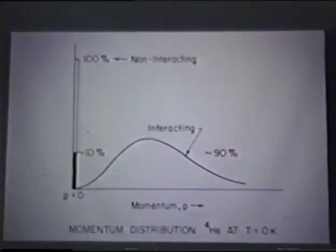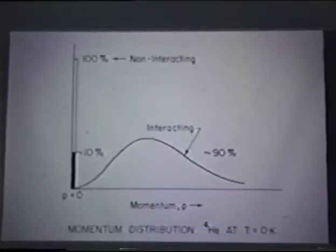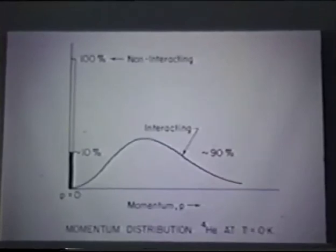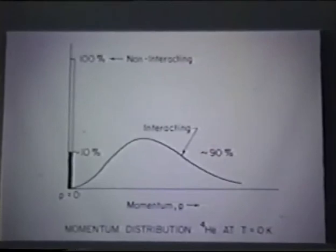This shows what you have if you have a non-interacting system, just a system of helium particles not interacting with one another. Then at T equals zero, they would all be in the lowest energy state, 100%. As a result of the interactions between them, only about 10% are in the zero momentum state. The rest are in the distribution above that.